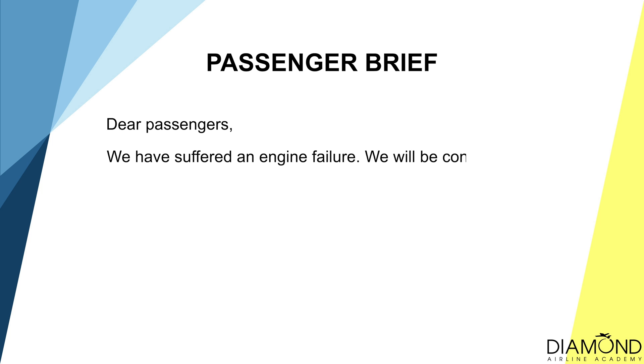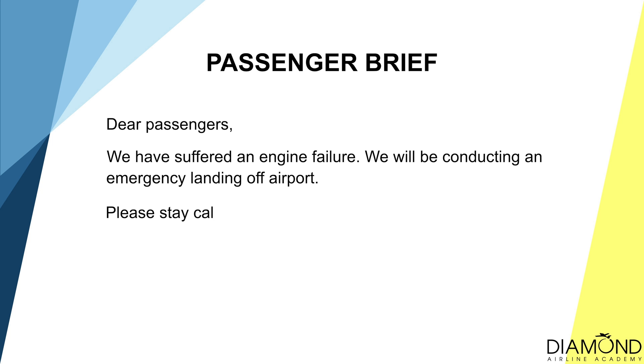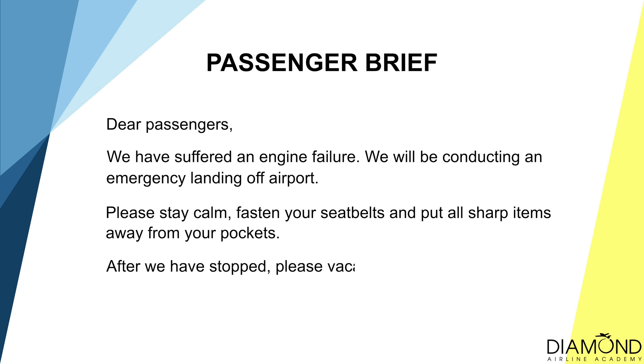After communicating with air traffic control, conduct a passenger brief to explain the situation and keep them calm. Instruct your passenger to fasten the seat belt, and if they have any sharp items, store them away in a safe location. Dear passengers, we have suffered an engine failure. We'll be conducting an emergency landing off airport. Please stay calm, fasten the seat belt, and remove all sharp items from your pocket and put them somewhere safe. After we have stopped, please vacate the aircraft and meet 100 metres in front of the aircraft.